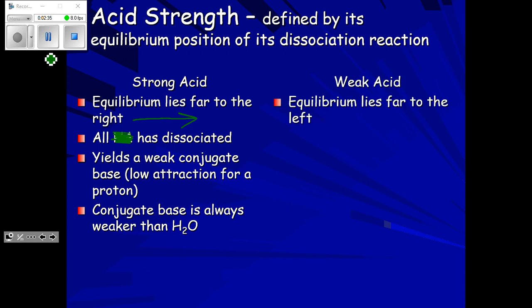For weak acids, the equilibrium lies far to the left. You can think of it as a much longer arrow going back to the left and a shorter arrow going to the right. Weak acids do dissociate a little bit. If you think about HF or acetic acid, we've said they stay together in double replacement reactions. Well, that's actually not entirely true — they do dissociate a little bit, but it's very minimal. They dissociate less than 5%.